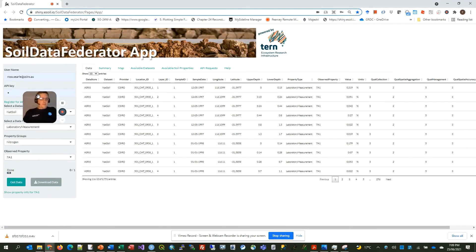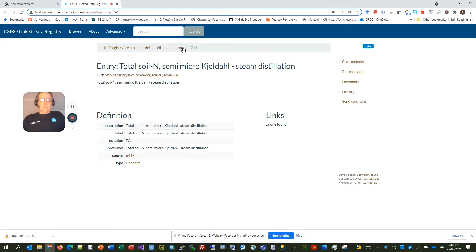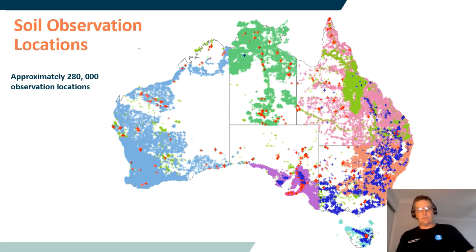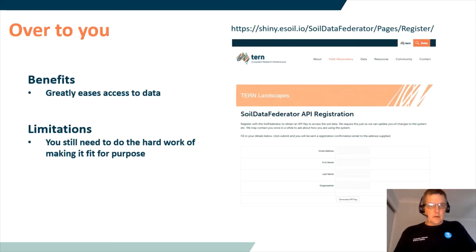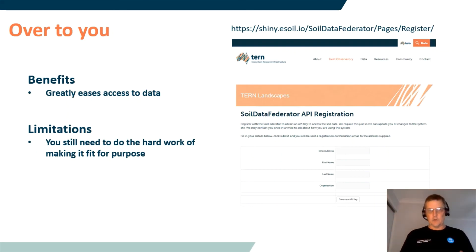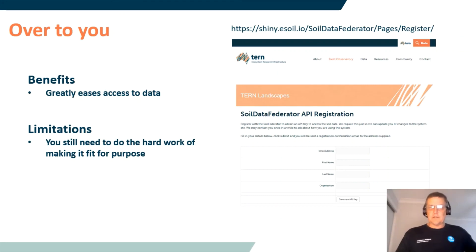I should also mention that the Soil Data Federator is linked to soil vocabularies with detailed definitions of what every soil property means, which greatly enhances interoperability of the system. Using the Soil Data Federator, we have access to approximately 280,000 locations of observed soils data at the moment. One limitation is that you still have to do the hard work of making the data fit for purpose — QA checking and data cleansing — as the data comes as it is from the various APIs. To use the API, you do have to register at the web page, just providing your email address so we can keep you up to date.